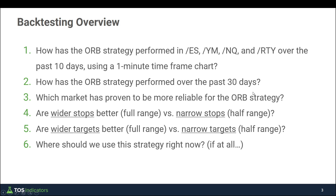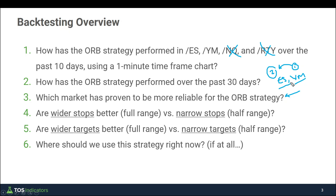Summarizing the takeaways from our initial hypothesis: the S&P and the Dow are the two markets where the breakout strategy is working better compared to the Nasdaq and the Russell. The Dow is actually number one, with the S&P close behind. So let's now spend some time on the S&P and the Dow and start to tweak some of these settings a little bit more to see if there's anything more we can find out.